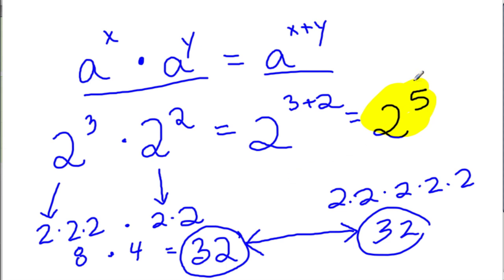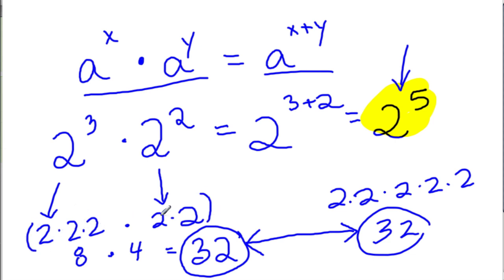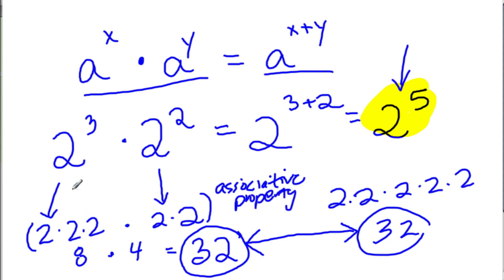If given a question like 'what is 2 to the fifth power,' I often go in reverse and think: what is 2 to the second, and what is 2 to the third? Figure them each out and multiply them together. So this law works both ways. Why does it work? When we do 2 to the third times 2 to the second, we're taking three 2s and multiplying by two 2s — that's five 2s altogether. We use the associative property of multiplication to regroup and think of them as one term.